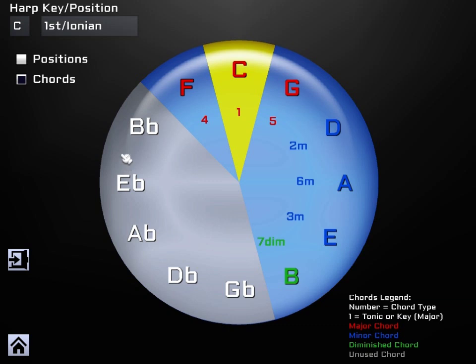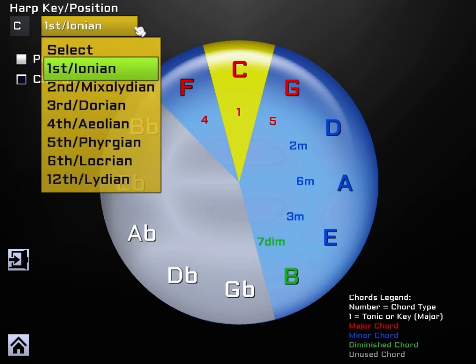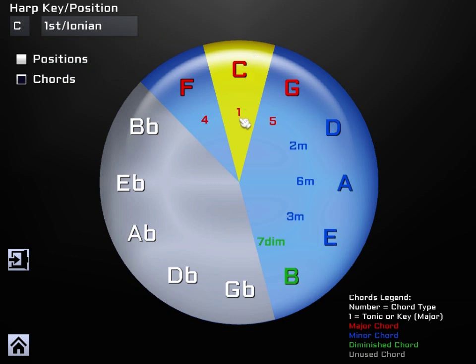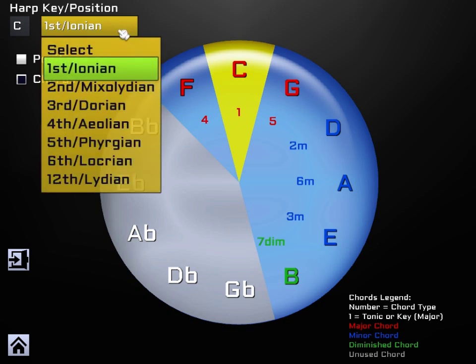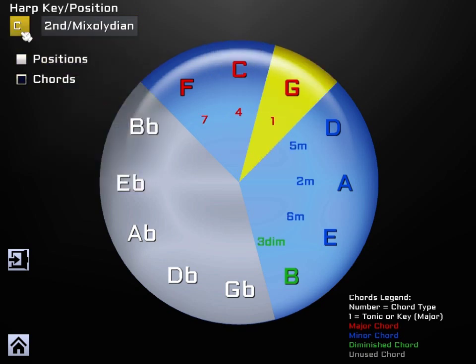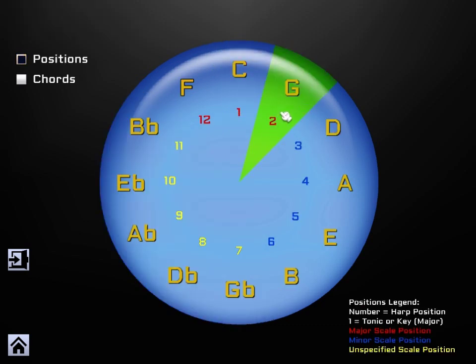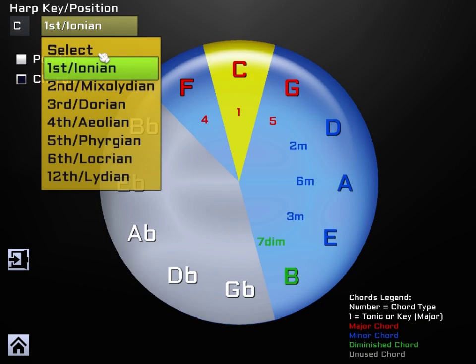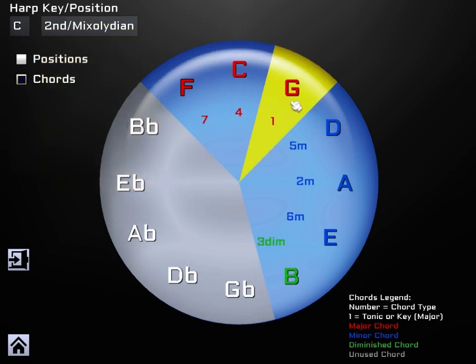But it gets really interesting when we want to look at the positions. That's first position, where C is, we're playing in what's called first position. So we want to populate those chord buttons with second position. We can just select the drop down there, we're still in the key of C harmonica, but we want to look at second position, which is key of G. Remember if we go back here into the positions, we can see that G is second position.